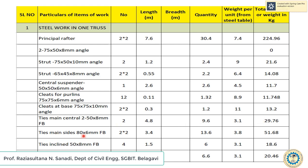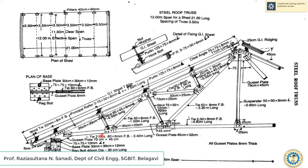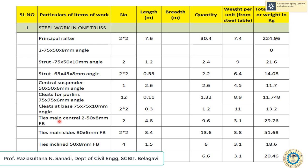Next is ties main side, 80 x 6 mm. There is one tie at each side, so total number is 2. The length given is 3.4 meters, giving a quantity of 2 x 2 x 3.4 = 13.6. The weight per unit is 3.8, so total quantity is 51.68 kg.